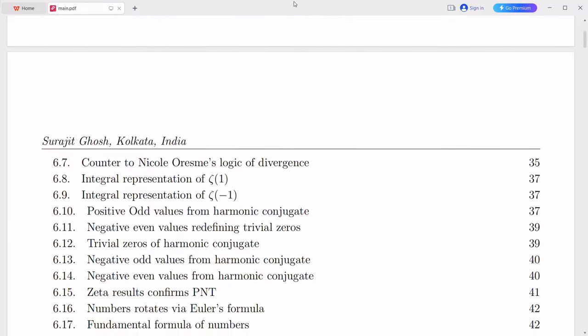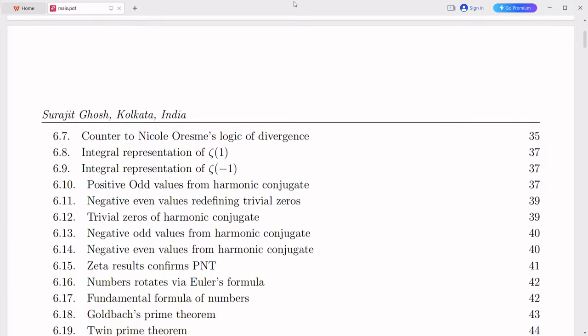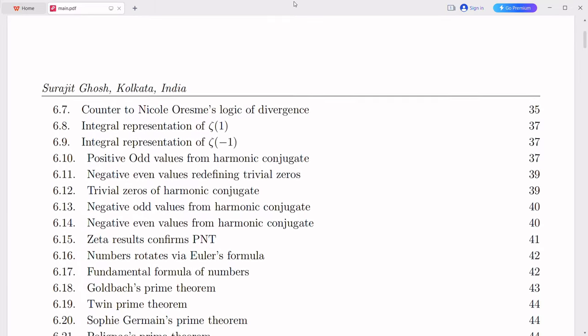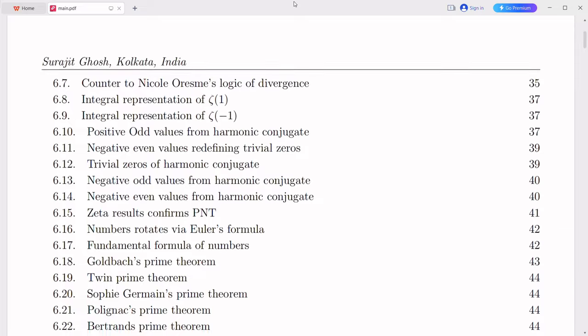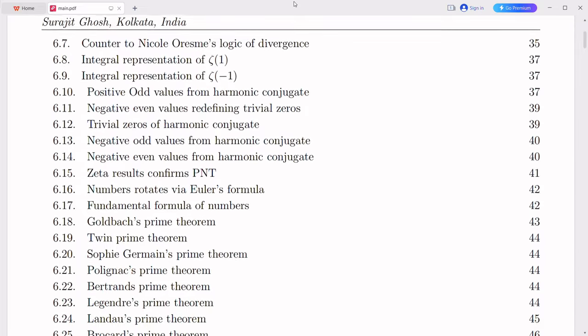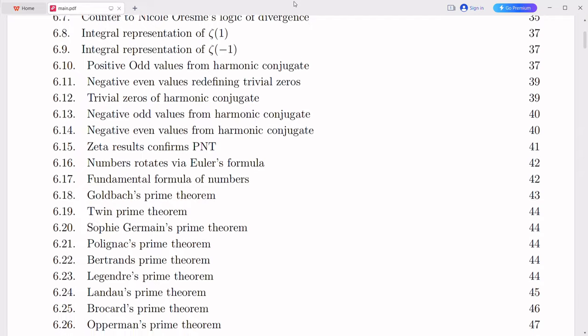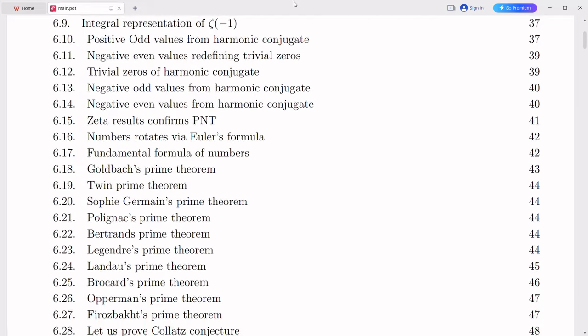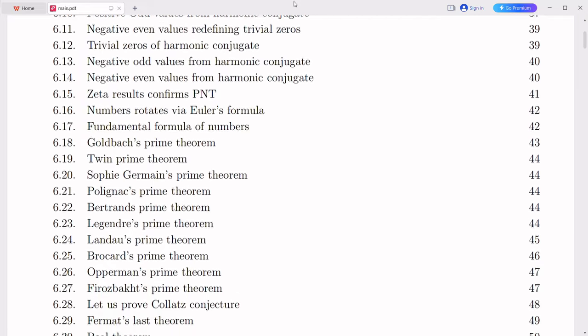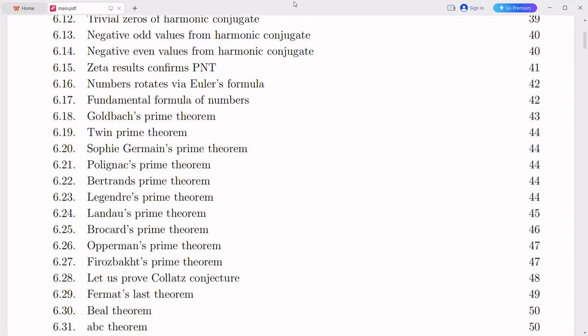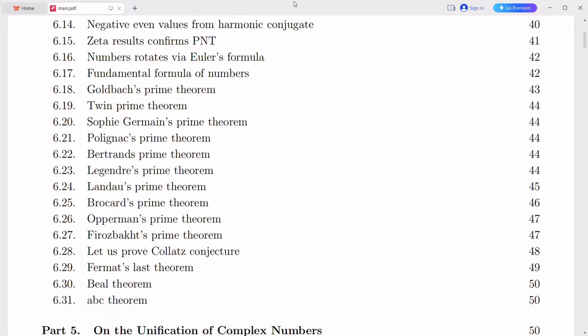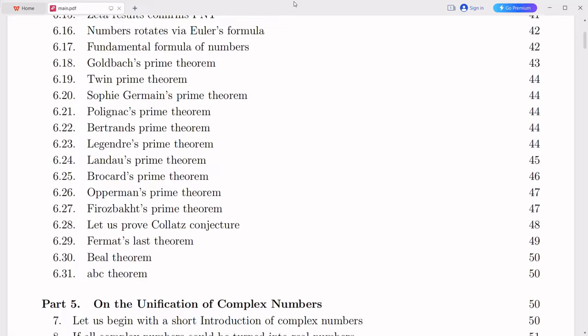Now, here's where it becomes intriguing. The Riemann hypothesis states that all non-trivial zeros of the zeta function reside on a critical line in the complex plane, characterized by the equation Re(s) equals one-half. By extending the domain of the zeta function further, we may gain the ability to explore these non-trivial zeros and strive to establish the validity of the Riemann hypothesis.